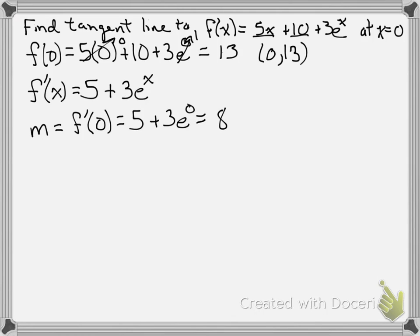And again, we already know our y-intercept because this was the point (0, 13). If we didn't, we could use point-slope form or solve for it. So our tangent line is going to be the equation y = 8x + 13 for this function at x = 0.